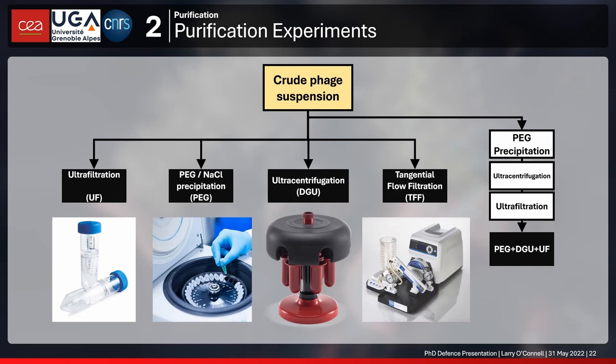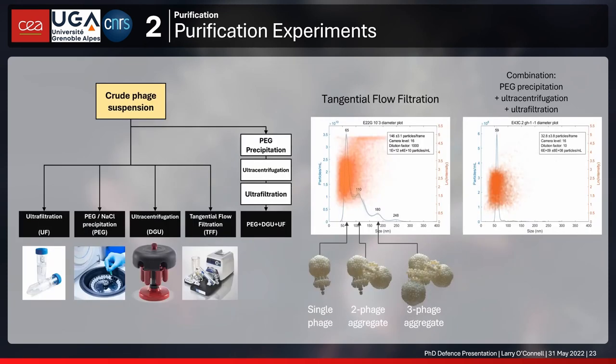We took our crude phage suspension and purified it by a variety of methods: ultrafiltration, chemical precipitation with polyethylene glycol, ultracentrifugation, tangential flow filtration, and also a daisy-chain of all three — ultracentrifugation, PEG precipitation, and ultrafiltration — leaving out TFF. I'll illustrate with the NTA results for just two of these suspensions.